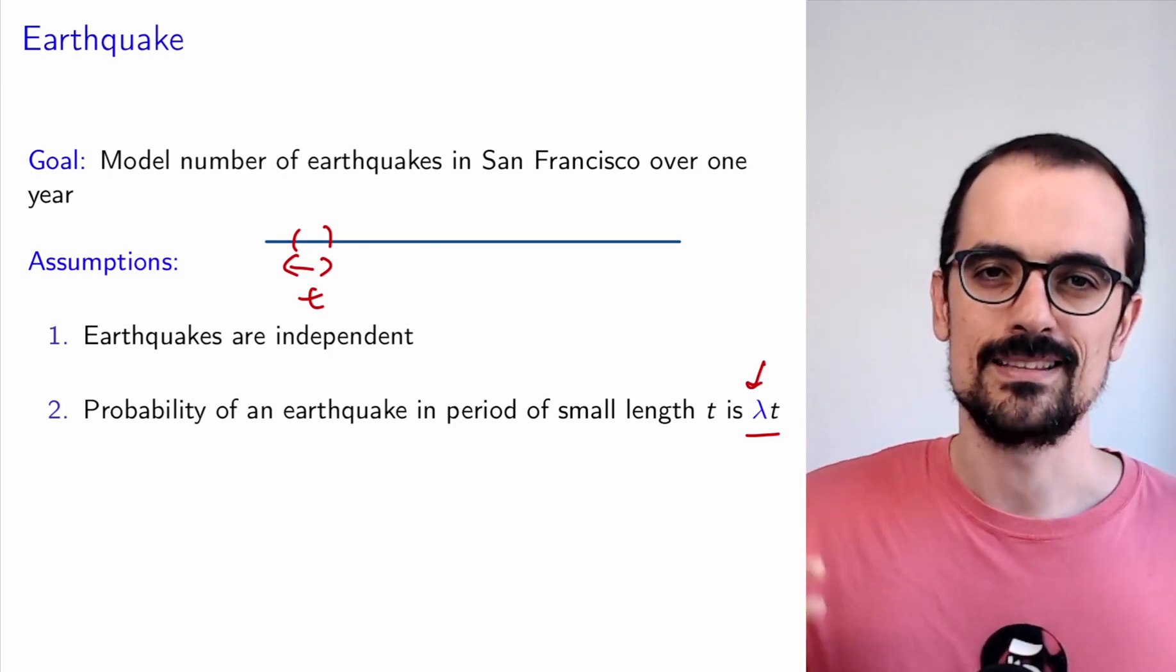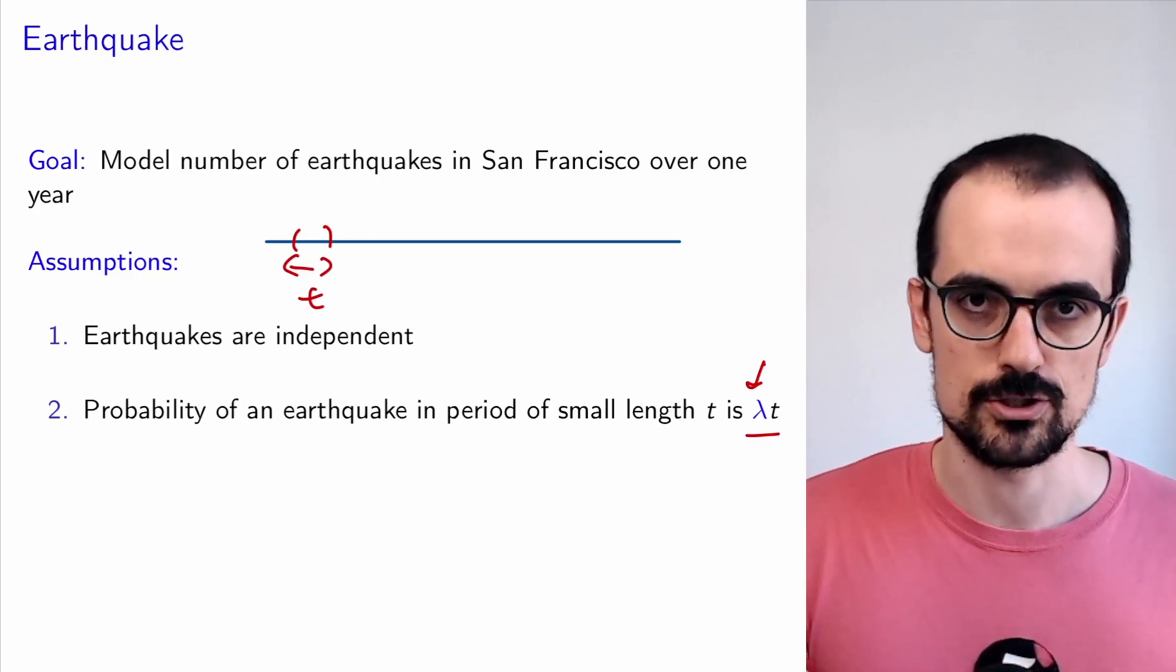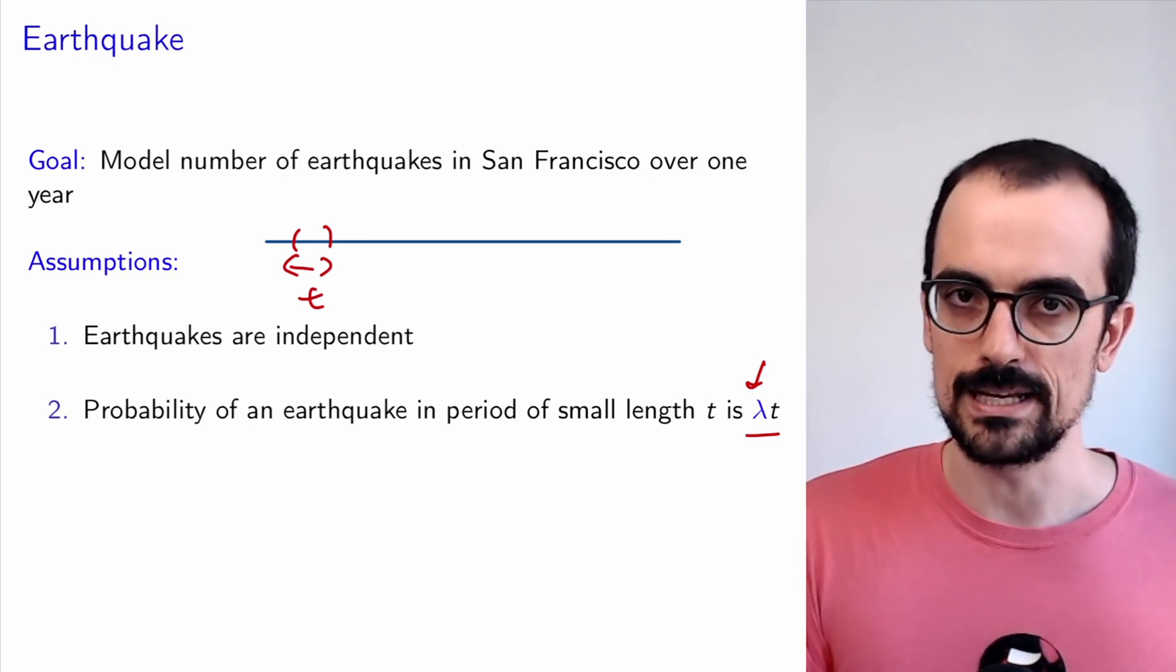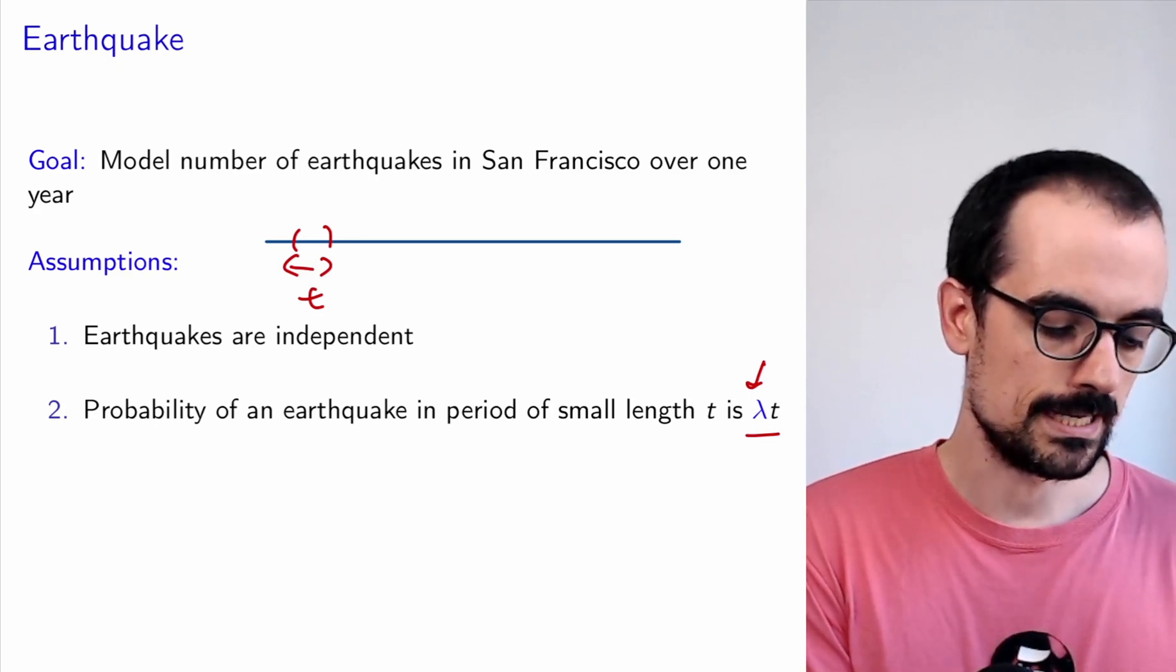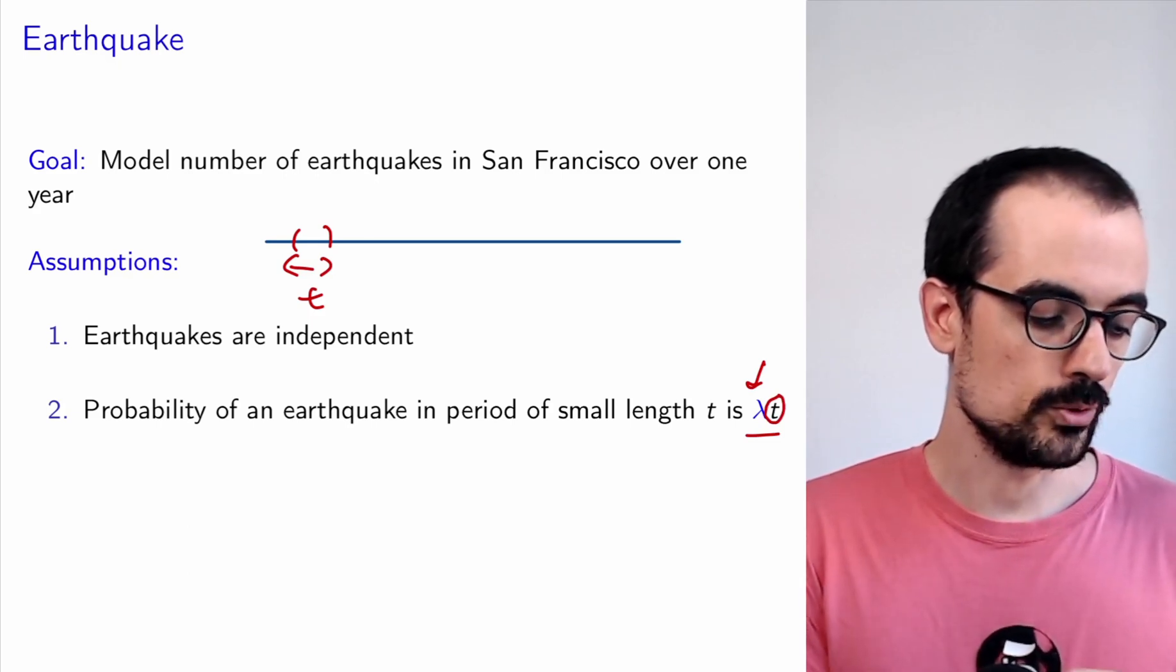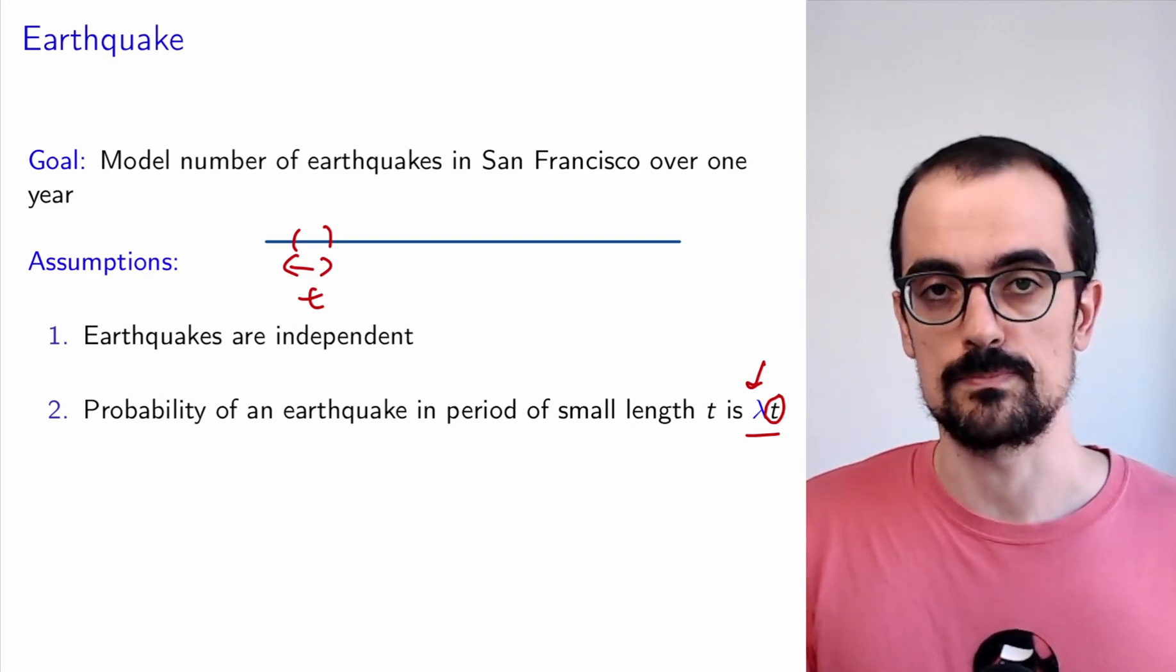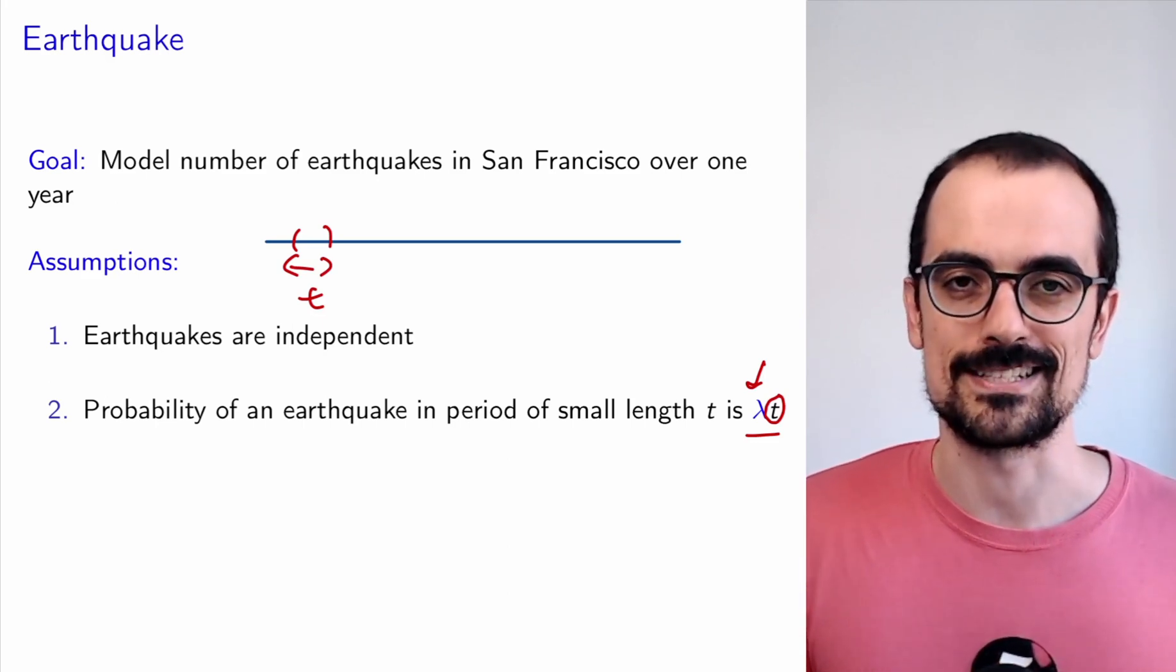So you can imagine it in the following way. The earthquakes are arriving at a certain rate, maybe like five per year or so. So when you look at a small, small, small slice of time, the probability that there's an earthquake or not is proportional to that overall rate of five earthquakes per year, but you have to multiply it by this interval t. And the thing is that when you take t to be extremely small, the probability of having more than one earthquake is going to be negligible with respect to the probability of having no earthquakes or one earthquake.